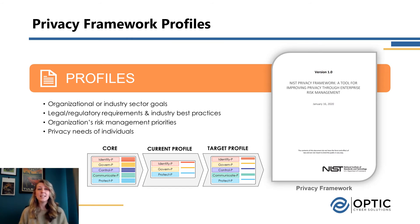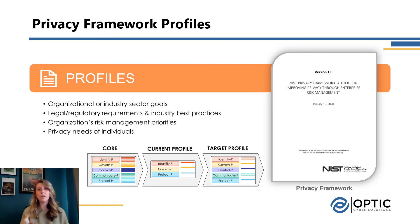Here we can see an example on the screen where we have the core with the five functions laid out. Looking at the current profile, we can see that two functions are missing — it looks like things are currently in place for identify, govern, and protect, but they're not currently doing anything for control and communicate. In the target profile shown in the graphic, they have added things to also include the control and communicate functions. Profiles are a way to document and communicate what you're doing today, where you want to go, and to have all of that in one place. It's also a great place where you can start pulling in your legal and regulatory requirements.